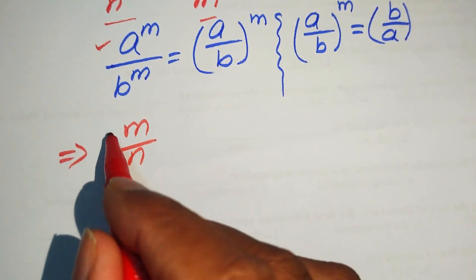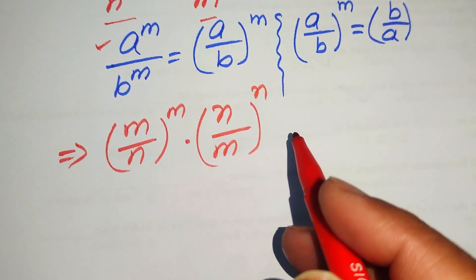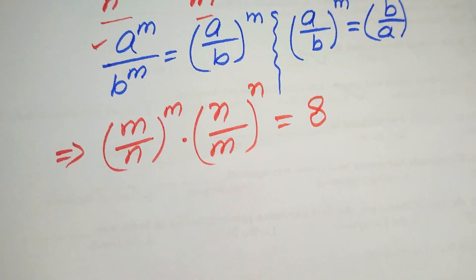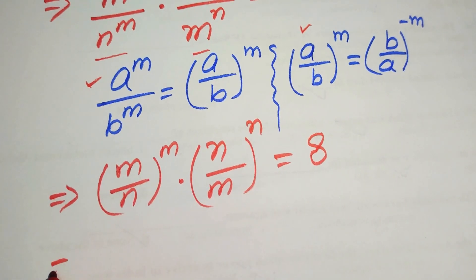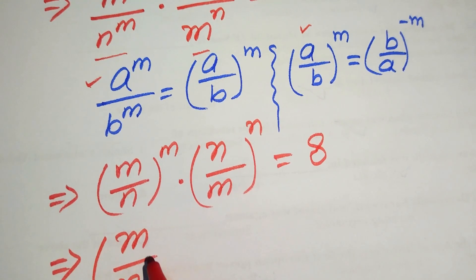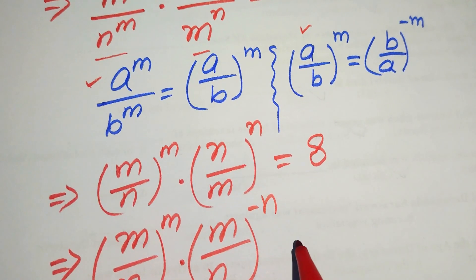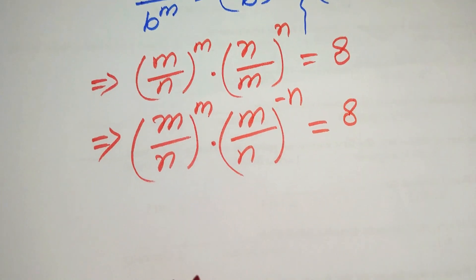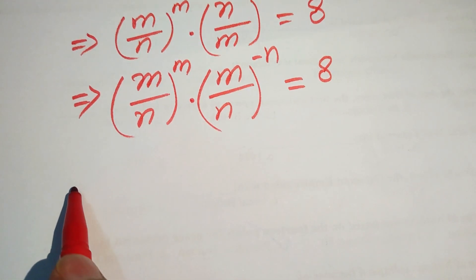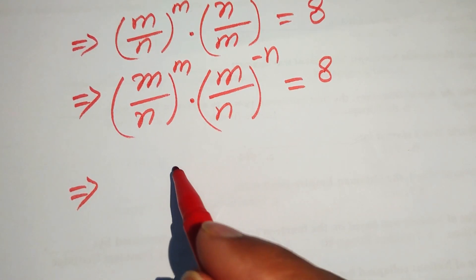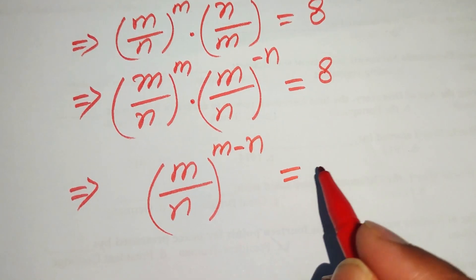Applying the first law, our equation becomes (m/n)^m multiplied by (n/m)^n equals 8. Then applying the second law — taking the reciprocal of the base makes the exponent negative — we write it as (m/n)^m multiplied by (m/n)^(−n) equals 8. Since the bases are the same, we add the exponents, giving (m/n)^(m−n) = 8.